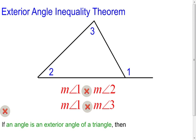Well, if I have to add the measure of angle 2 and angle 3 together to make it equal the measure of angle 1, then the measure of angle 1 is going to be greater than just the measure of angle 2, and it's also going to be greater than just the measure of angle 3.